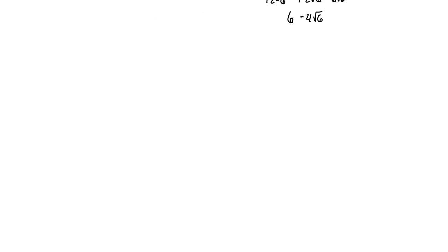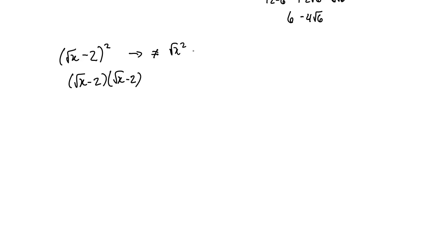Let's do one more: the quantity square root of x minus 2, all squared. One thing to note: this is NOT equal to x minus 4 applied separately — you can't just square each term. We can rewrite it as two factors and FOIL. Root x times root x is x; root x times negative 2 and negative 2 times root x give negative 2 root x twice, so negative 4 root x; and negative 2 squared is plus 4.